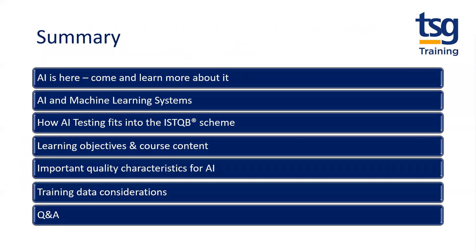In summary, AI is here — come and learn more about it. I went through a bit about how AI and machine learning systems are different, and that's why there's now a specialist course in the ISTQB scheme. The learning objectives and course content are available on the TSG website, and the syllabus is on the ISTQB website. I've highlighted some interesting angles of AI to give you a taster of what's covered, and I hope this has whetted your appetite. I look forward to seeing you on a course at TSG Training — thank you for joining me today. If there are any questions, please put them in chat. Otherwise, goodbye.